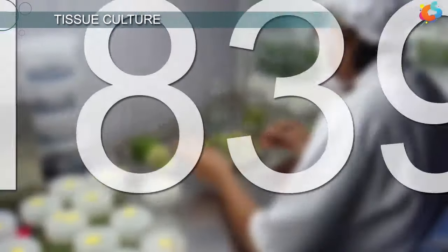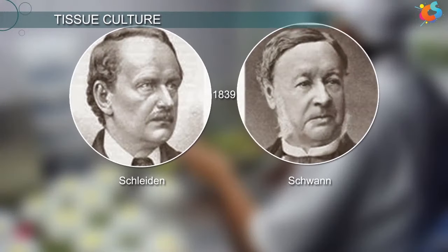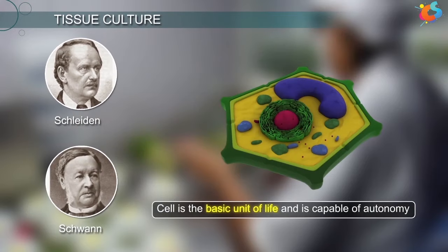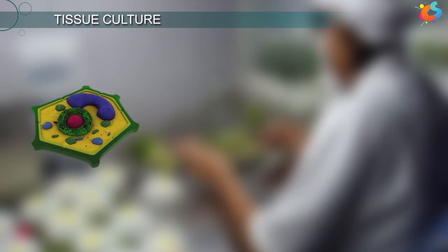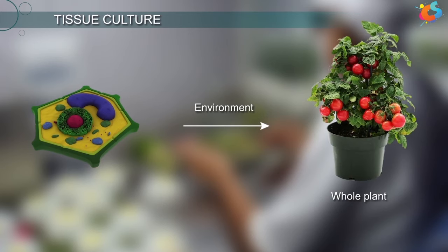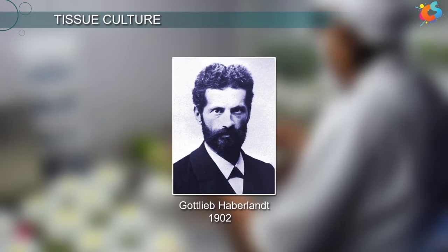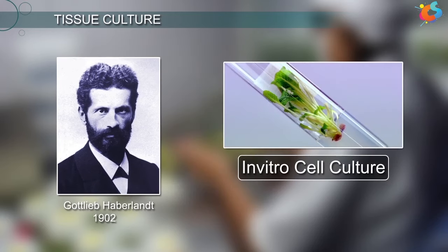In 1839, Schleiden and Schwann proposed that the cell is the basic unit of life and is capable of autonomy. Each cell, if given an environment, is capable of regenerating into a whole plant. Based on this theory, a German physiologist, Gottlieb Haberlandt, in 1902, developed the concept of in vitro cell culture, also called tissue culture.